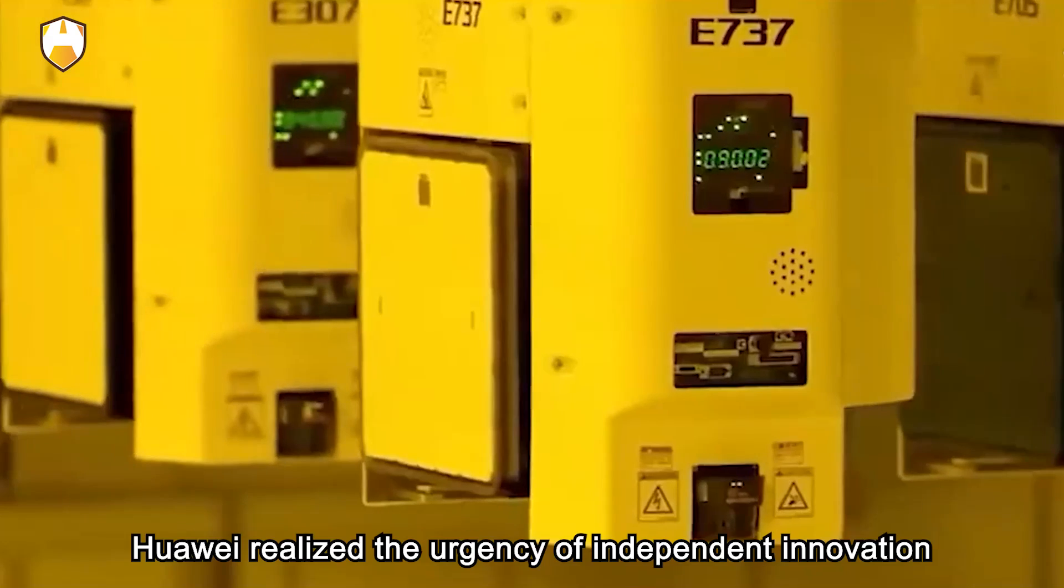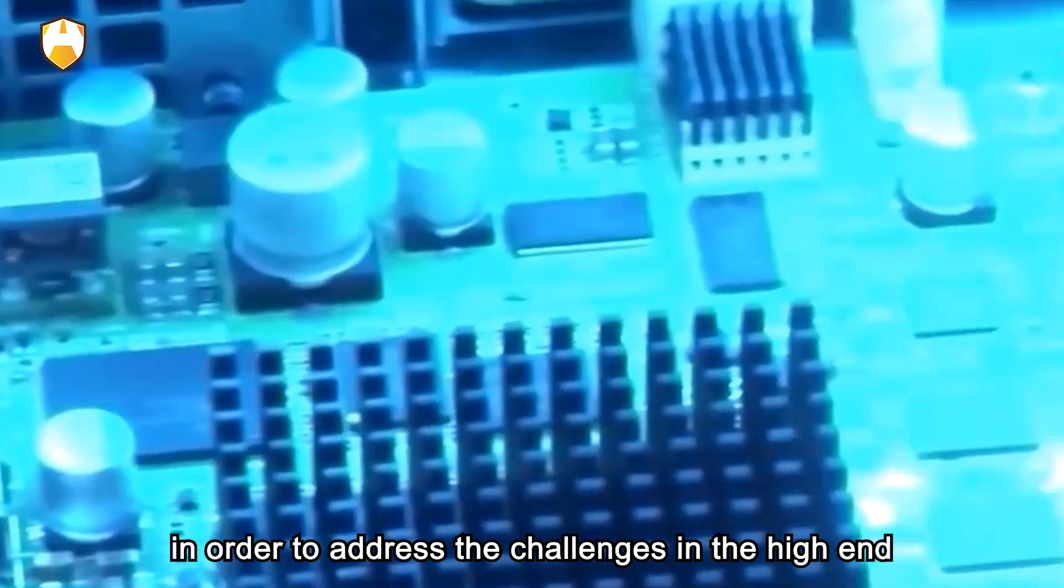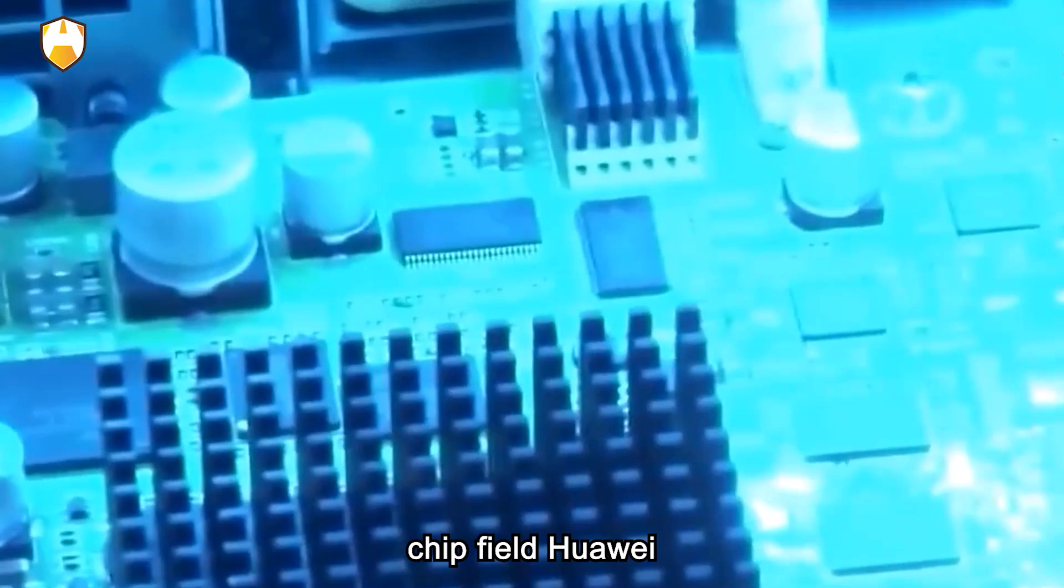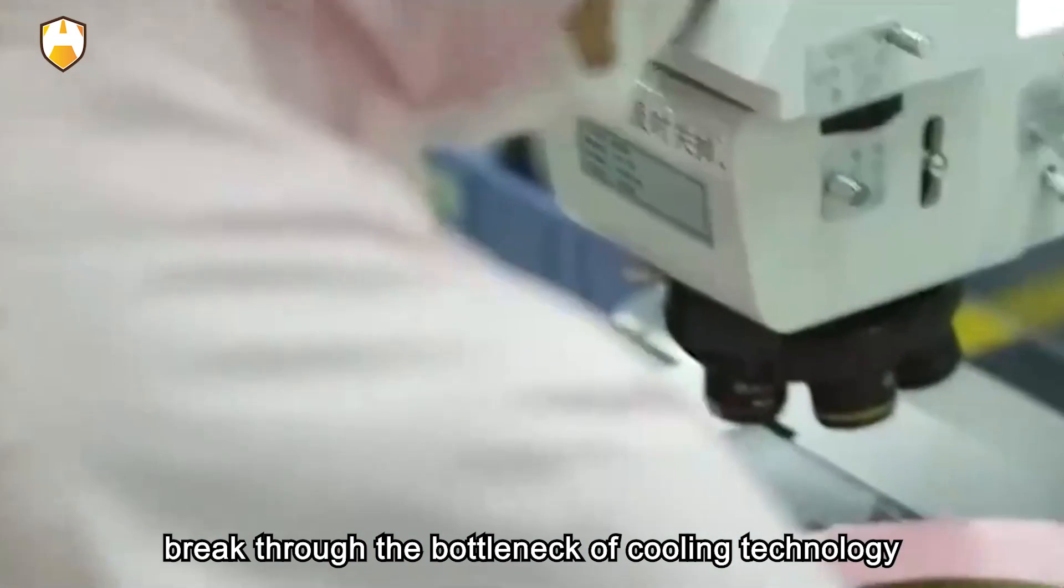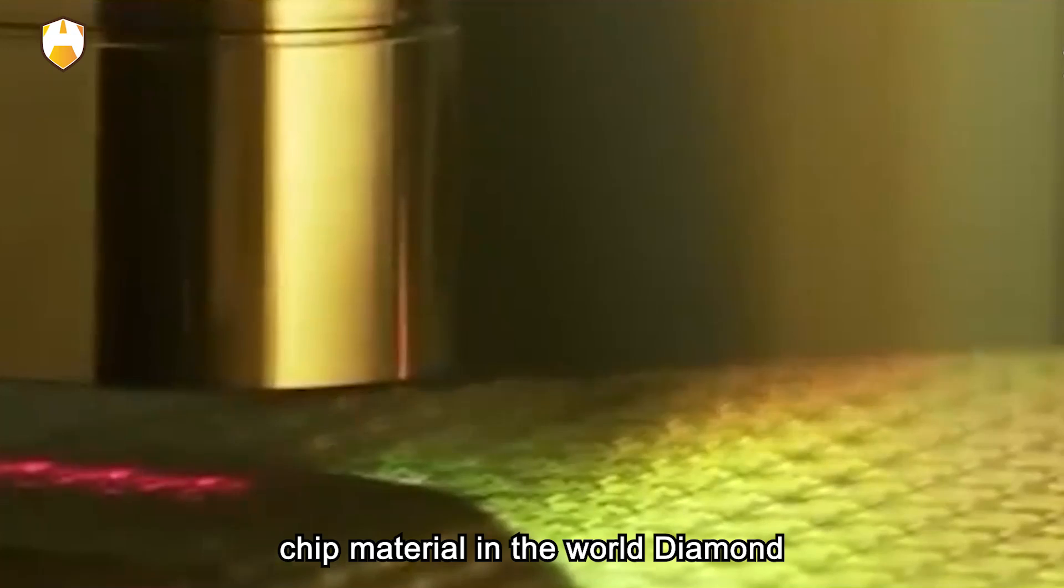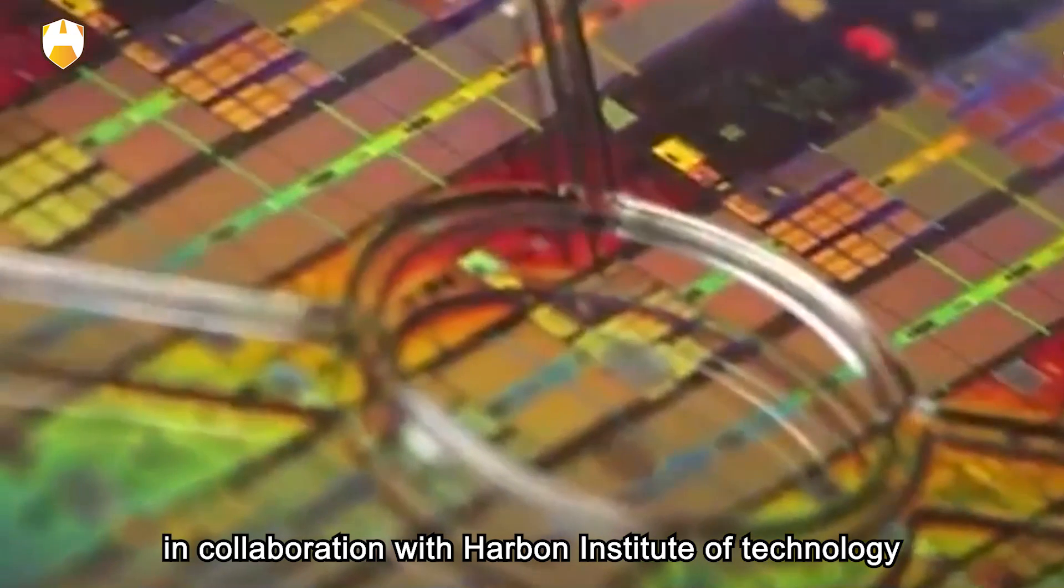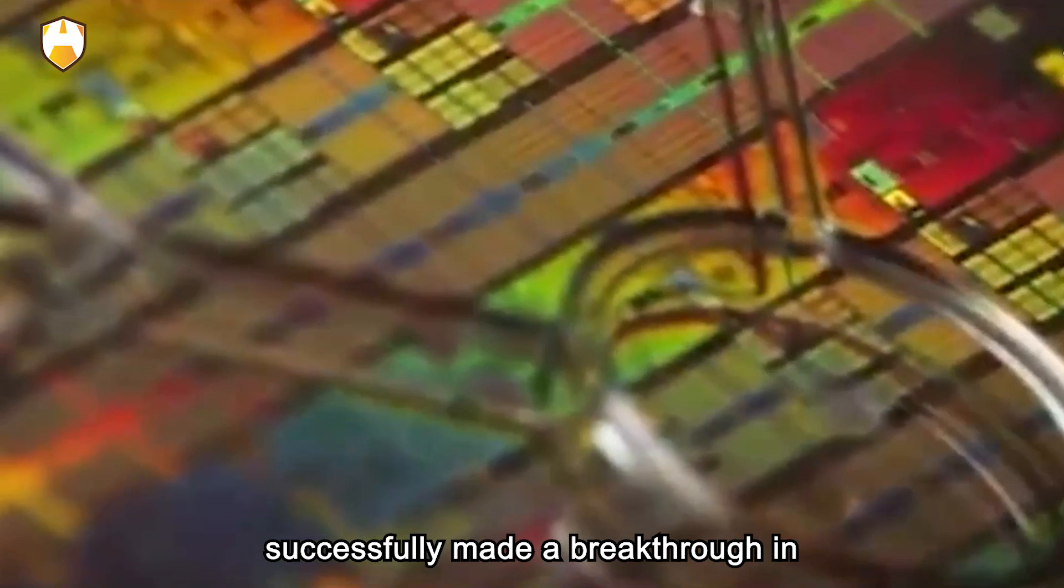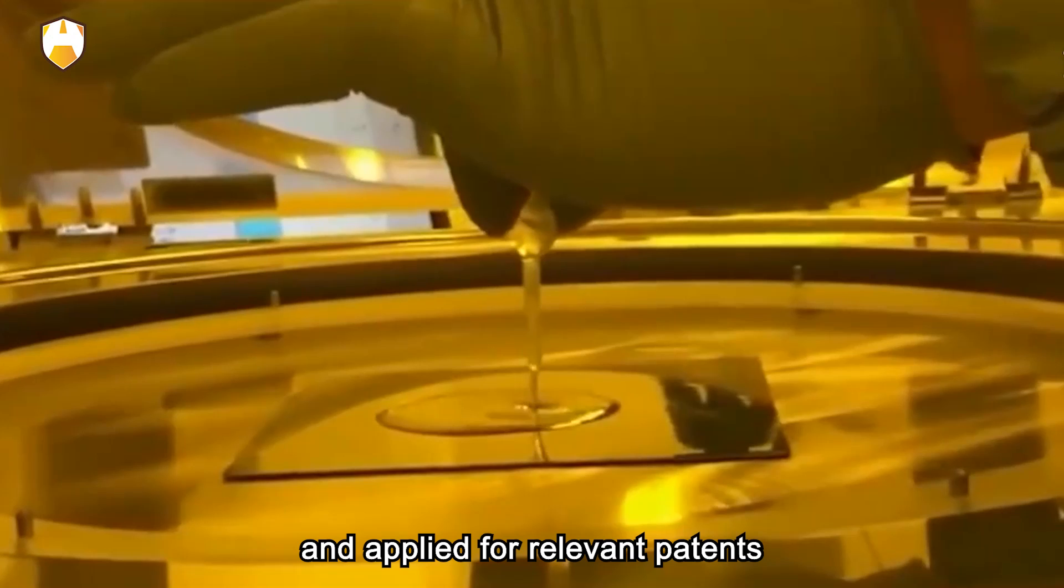Against the backdrop of U.S. sanctions on Chinese chips, Huawei realized the urgency of independent innovation. In order to address the challenges in the high-end chip field, Huawei decided to break through the bottleneck of cooling technology, turning their attention to the hardest chip material in the world: Diamond. Huawei, in collaboration with Harbin Institute of Technology, successfully made a breakthrough in diamond chip technology and applied for relevant patents.